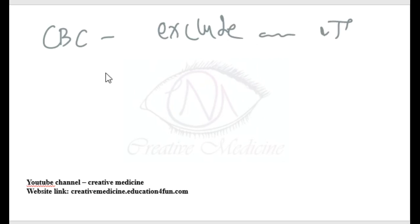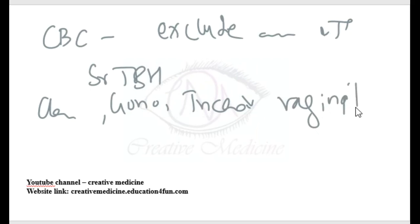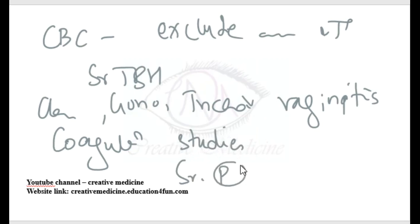Infections such as chlamydia, gonorrhea, or trichomonas vaginalis should be screened for. If any chlamydia, gonorrhea, or trichomonas vaginitis infection is found, it should be treated first. Coagulation studies should also be done, along with serum progesterone levels on day 22 to 24.